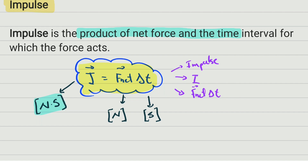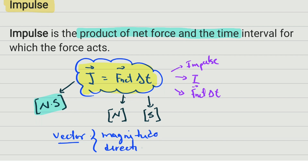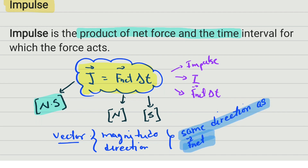The other thing to mention is that impulse is a vector. Impulse has magnitude and direction, and its direction is the same direction as the net force — because it is the net force that causes the impulse.